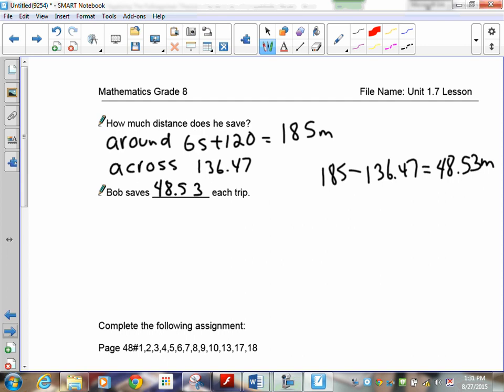Now, that doesn't sound like much. But if this is the way he goes to school, he's going to do this twice. So, you have to multiply that by 2. So, round that off, that's about 100 meters. He saves about 100 meters a day. There's 188 school days. So, that means he is going to save that much distance.